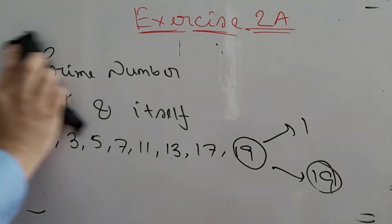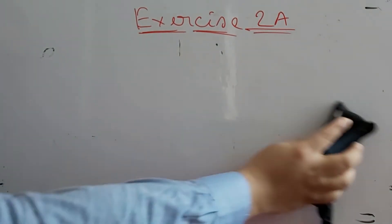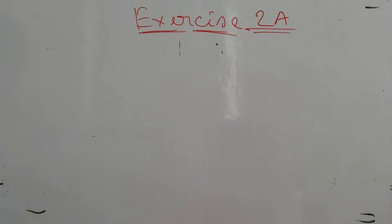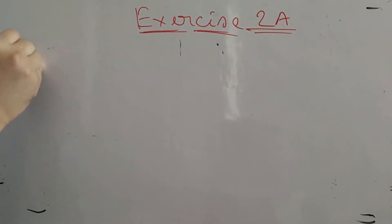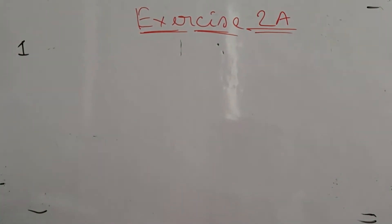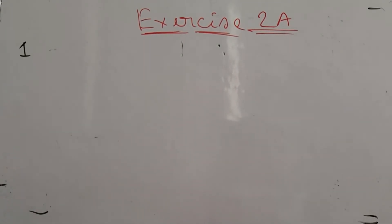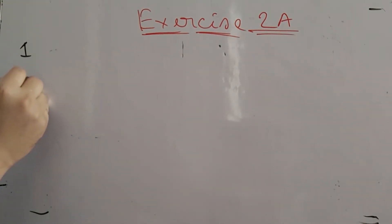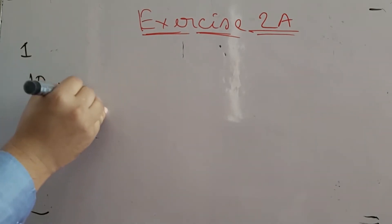Now we already know the definition of the prime number. Number one: write down all the prime numbers between 10 and 20. We will find out how many prime numbers are there between 10 and 20. Between 10 and 20, we have the numbers 10, 11, 12...